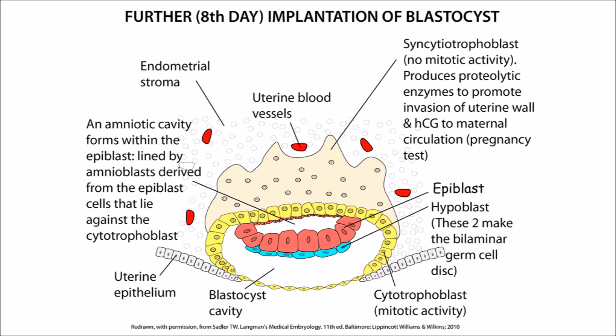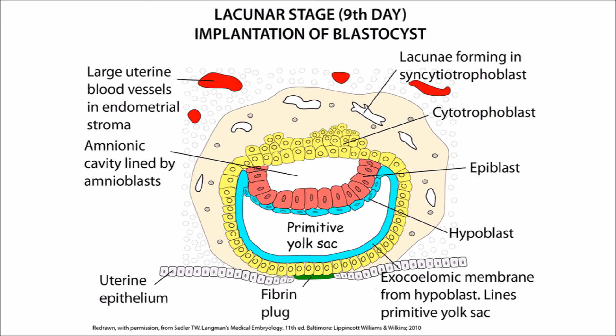The trophoblastic cells produce an amorphous mass of tissue which is called the syncytiotrophoblast, in which there's virtually no mitotic activity. But this syncytiotrophoblast gets into contact with the uterine stroma, in which of course there are many uterine blood vessels. The uterine epithelium begins to heal over so that the blastocyst is within the uterine wall itself. The inner cell mass, or the embryoblast, now forms a plate of cells called the epiblast. Other cells just beneath this epiblast are called the hypoblast, and the two structures together become known as the bilaminar germ cell disk. Between the epiblast cells and the trophoblast, a cavity appears which is to become the amniotic cavity, lined by cells from the epiblast called amnioblast cells.